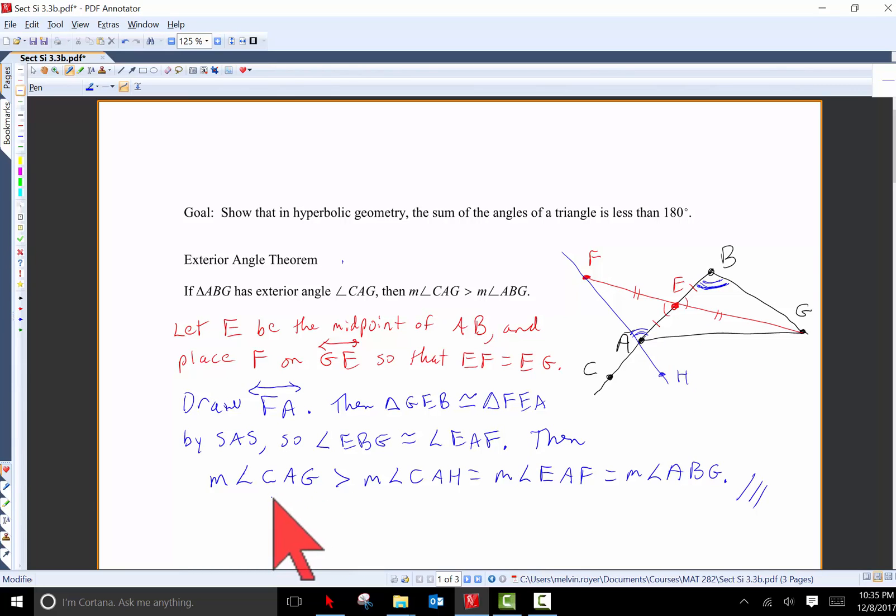That's by side angle side and so angle EFA is congruent to angle EBG. Now the measure of angle CAG, this exterior angle we want to talk about, is certainly greater than the measure of angle CAH. Since CAH is part of the bigger angle, but CAH is congruent to its vertical angle EAF and we just showed that was congruent to angle ABG. So that does it.